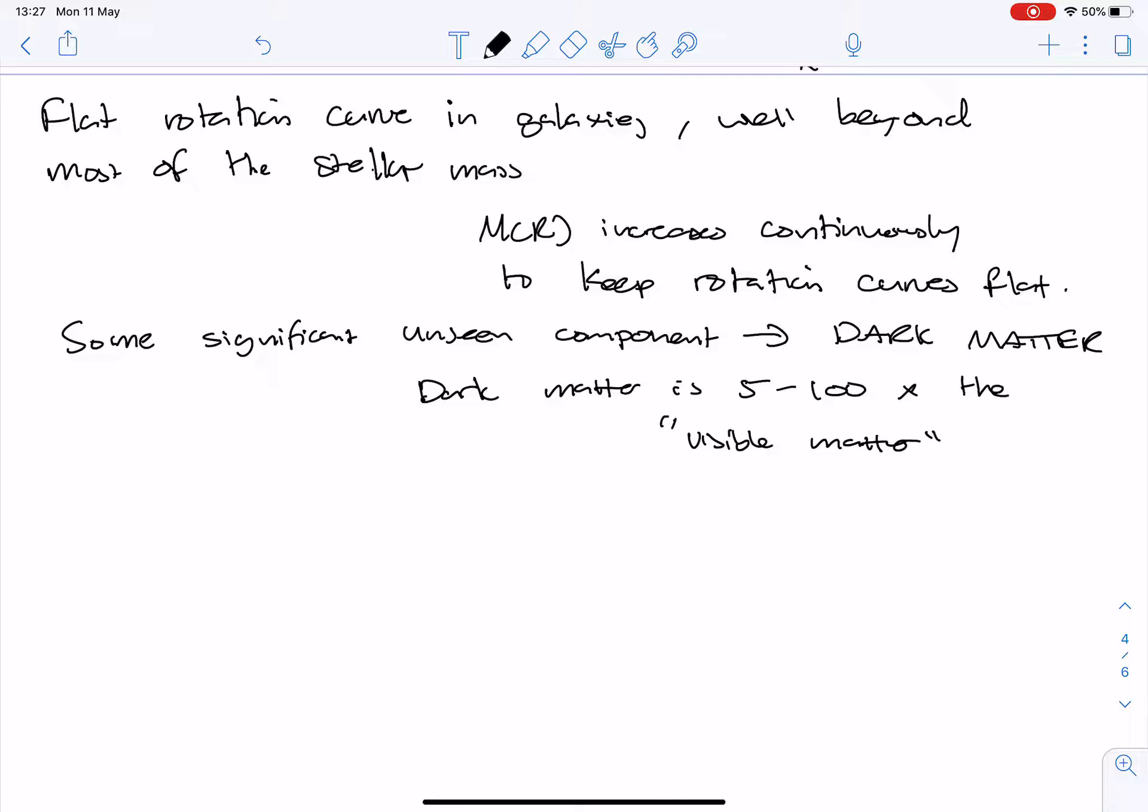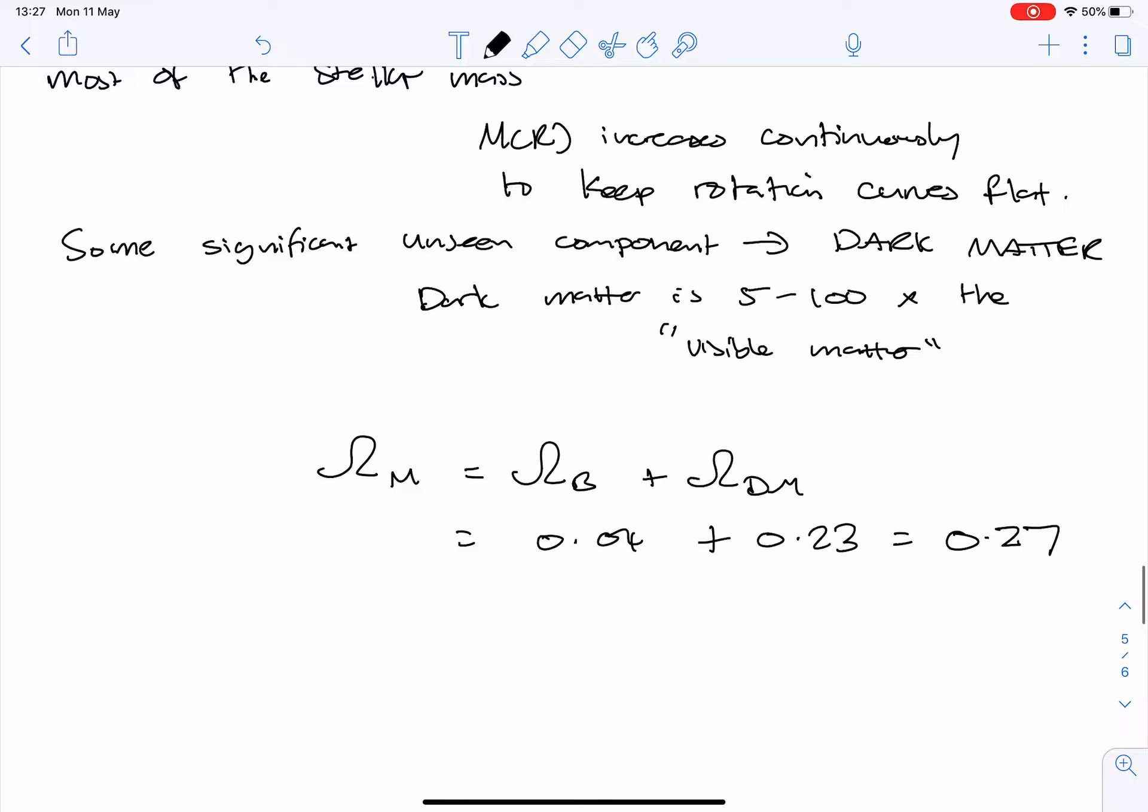And what that means in turn is that you can come up with a total matter density, which is equal to omega baryon plus omega dark matter, which is equal to 0.04 plus 0.23 equal to 0.27 of the critical density. So in other words, most of the matter in the universe you can't see.